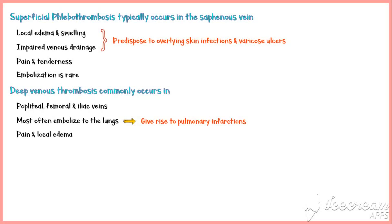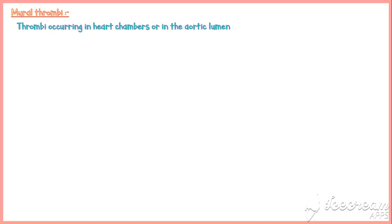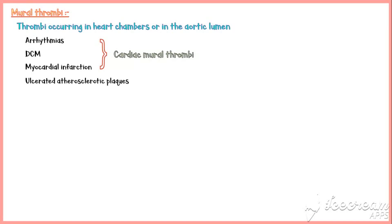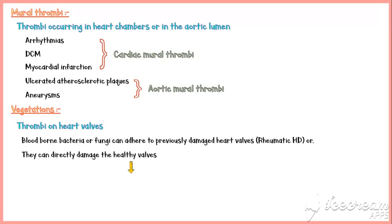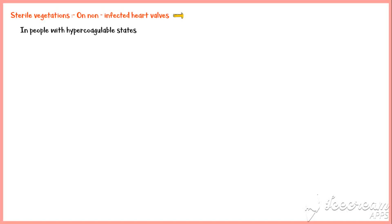Deep venous thrombosis also causes pain and local edema. In contrast to arterial thrombi, venous thrombi are more red in color because they have more red blood cells and fewer platelets; therefore, lines of Zahn are not very prominent. Additionally, there are mural thrombi, which occur in heart chambers or the aortic lumen — arrhythmias, dilated cardiomyopathy, and myocardial infarction are commonest causes for cardiac mural thrombi, while ulcerated atherosclerotic plaques and aneurysms are commonest causes for aortic mural thrombi. Vegetations are thrombi occurring on heart valves; sterile vegetations in hypercoagulable states are known as non-bacterial thrombotic endocarditis.